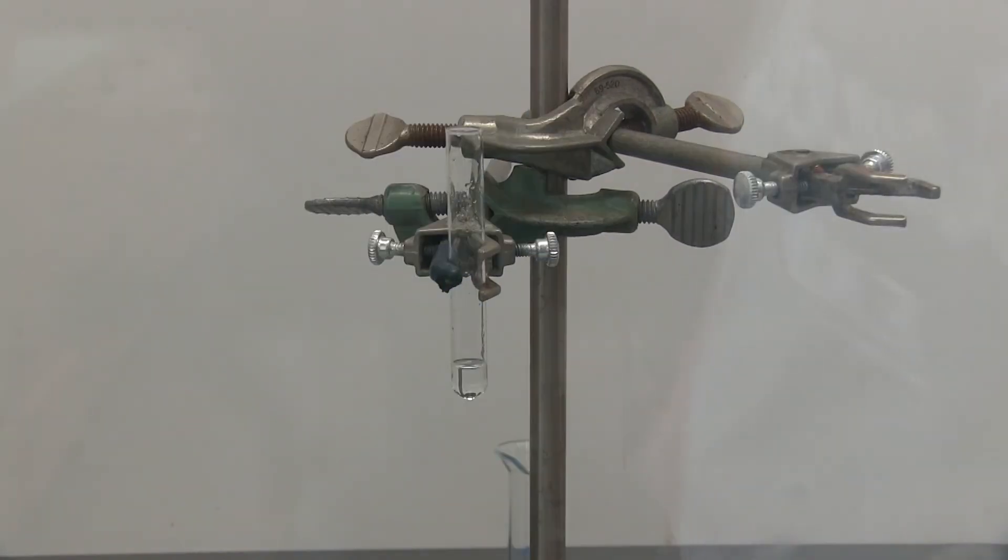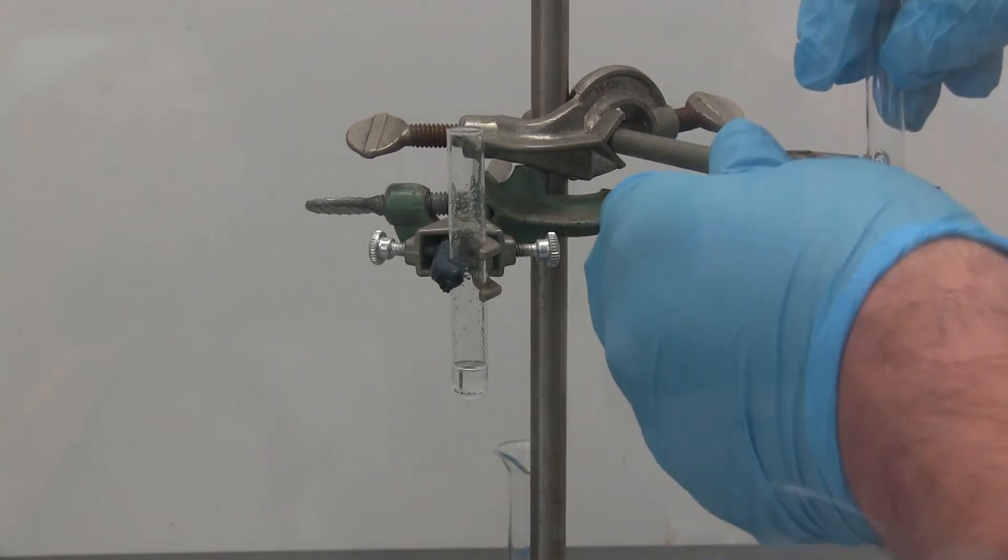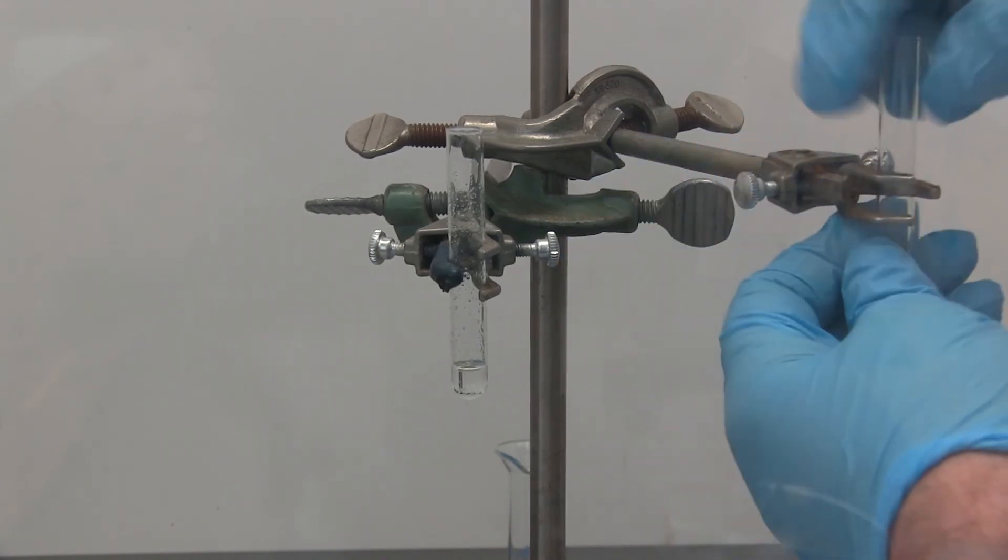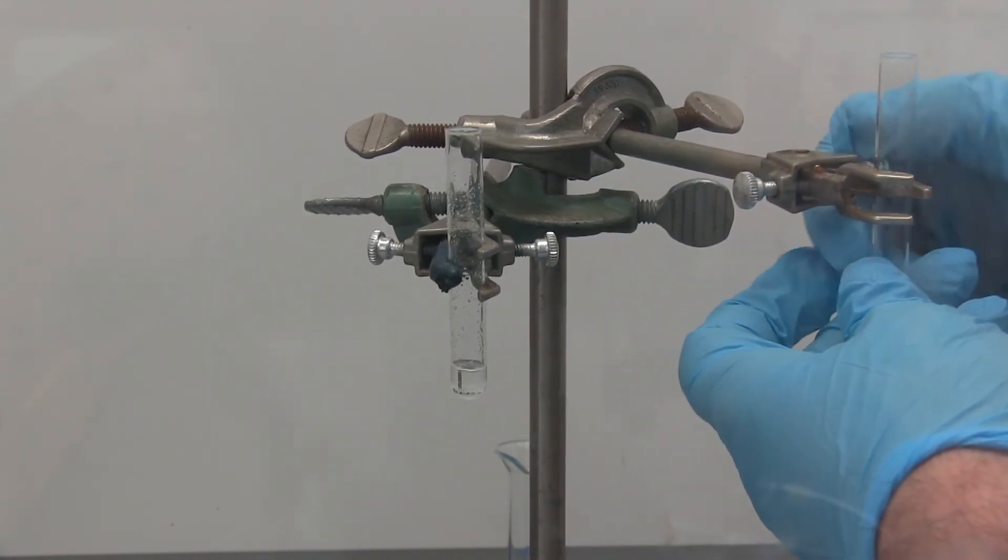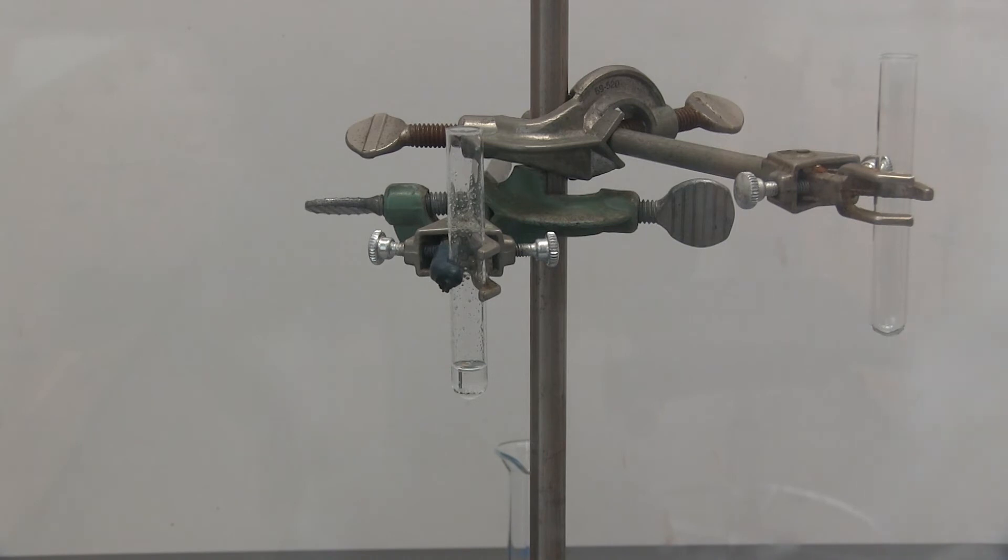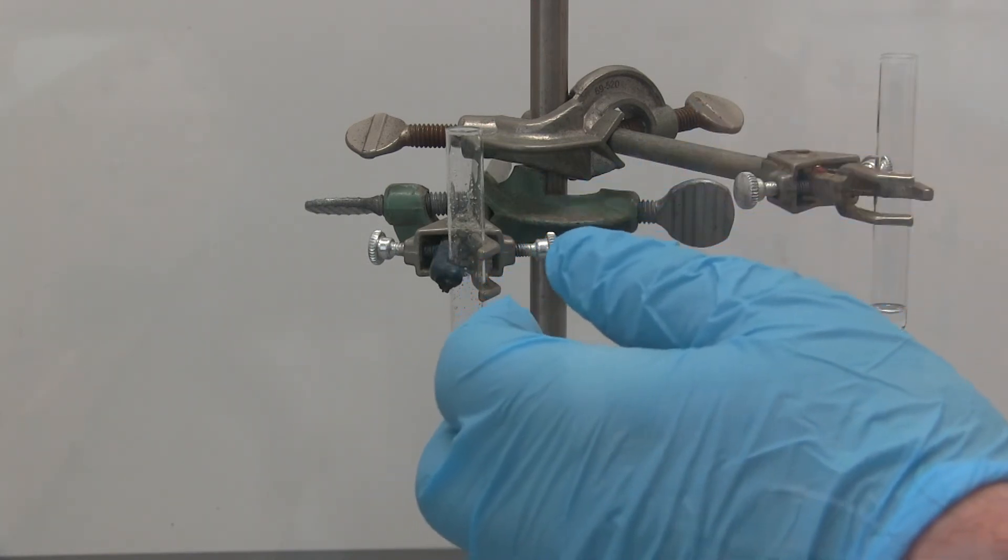We're going to dry it with a small amount of anhydrous sodium sulfate. Now that we put our anhydrous sodium sulfate in there, we're going to transfer it one more time to a new test tube and leave behind the anhydrous sodium sulfate. Don't think I can get any more, so I'm going to move this back to the side.